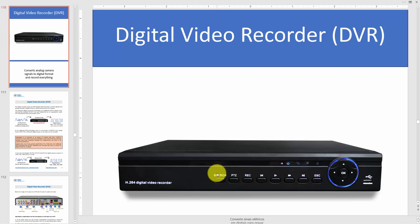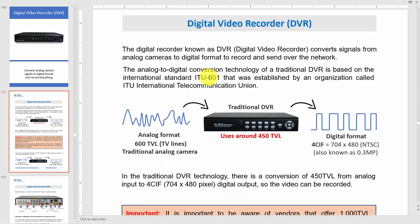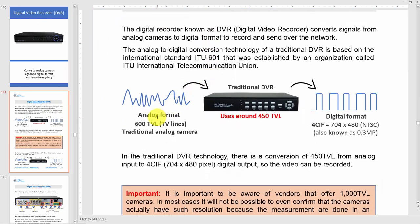Digital video recorders are very important if you want to record video from your analog cameras. Here I have a diagram showing that the analog signal comes into your DVR, which converts it to digital format — for example, SIF resolution, which represents 704 by 480, or about 0.3 megapixels.